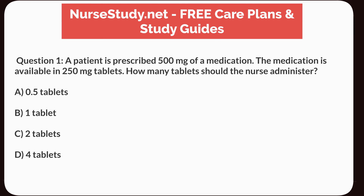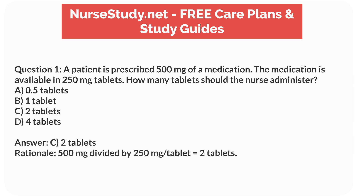Question 1. A patient is prescribed 500mg of a medication. The medication is available in 250mg tablets. How many tablets should the nurse administer? a. 0.5 tablets, b. 1 tablet, c. 2 tablets, d. 4 tablets. Answer: c. 2 tablets. Rationale: 500mg divided by 250mg per tablet equals 2 tablets.